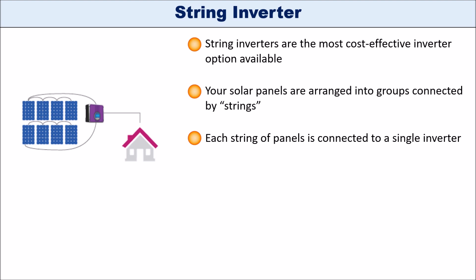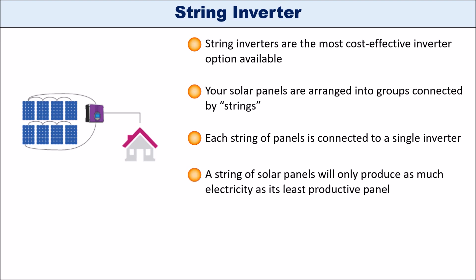Each panel is connected to a single inverter. You can have multiple panels connected into one string, and that string is connected to a single inverter which transforms the DC electricity produced by the panels into appliance-friendly AC electricity. String inverter technology has been used for decades — it's a tried and tested technology, but it's not suitable for all types of installations. The drawback is that a string of panels would only produce as much electricity as its least productive panel — essentially the weakest link.